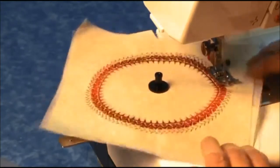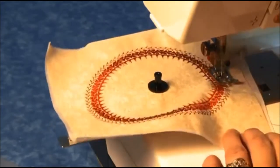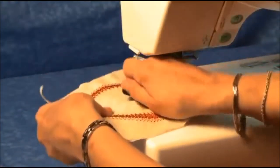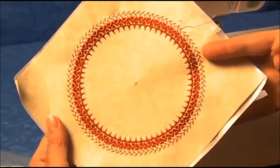Sew right up to your beginning stitch, then clip your thread and remove the cap. You've sewn a decorative stitch in a complete circle.